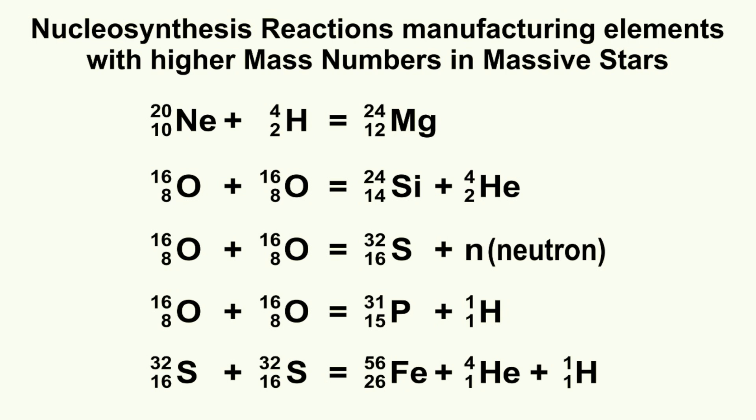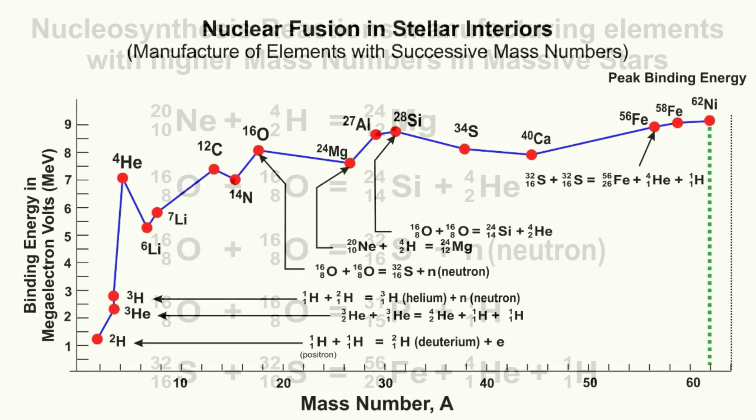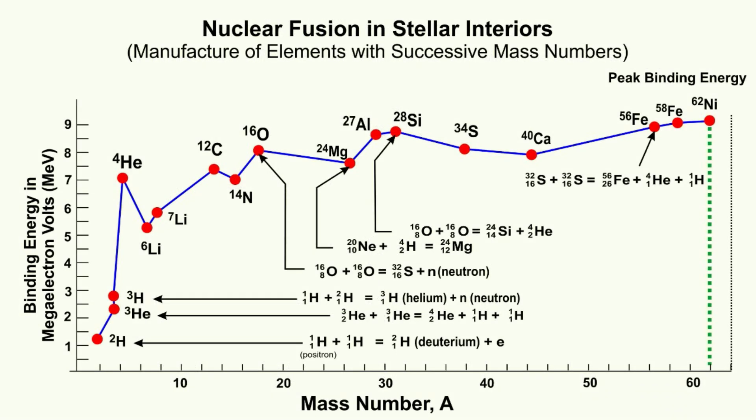Why is aluminum with even A far less abundant than silicon, which is adjacently placed in the periodic table? Because it has odd Z and odd N. Similarly, nitrogen has even A but with odd Z and odd N, and it has lower abundance compared to oxygen and carbon. Thus, all such elements like nitrogen, boron, and lithium, which have even A but have odd Z and odd N, are less abundant than elements with even Z like carbon and oxygen.